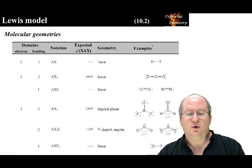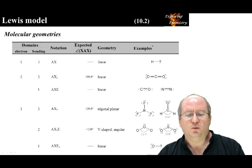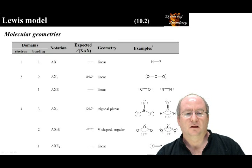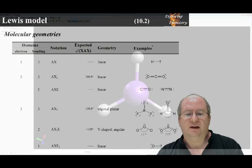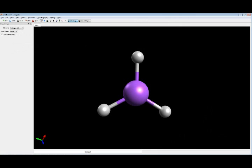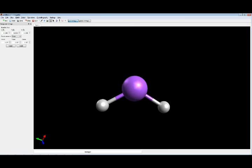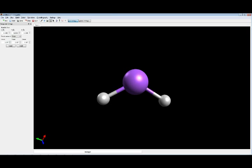You are expected to know the ideal bond angles, but not to memorize actual bond angles for different entities. However, you should be able to predict whether the bond angle will be greater than or less than the ideal bond angle. In Avogadro, given a trigonal planar geometry, removing an atom leaves the non-bonding pair of electrons still influencing the geometry, resulting in an angular or V-shaped geometry.